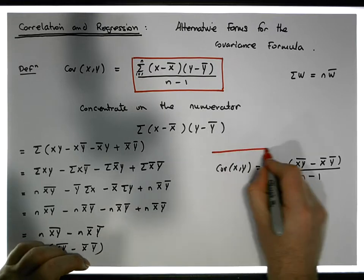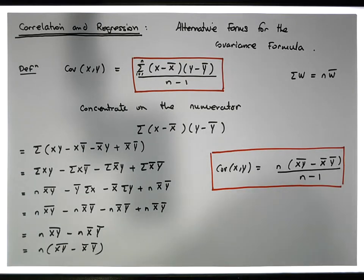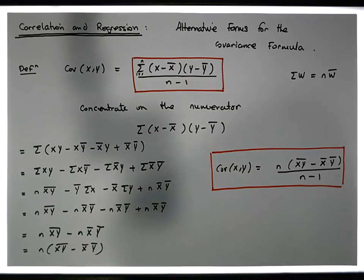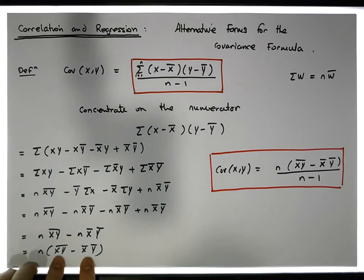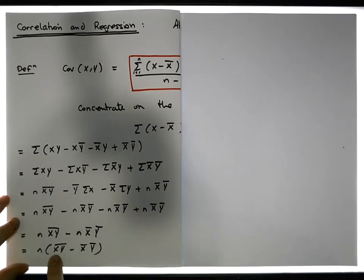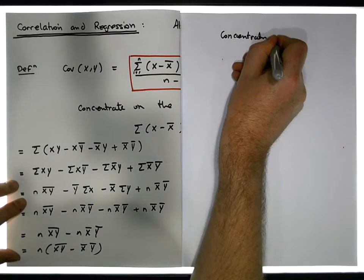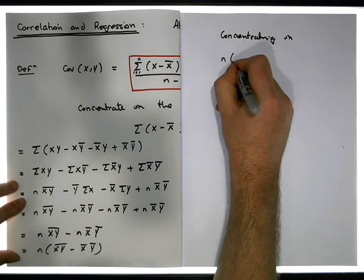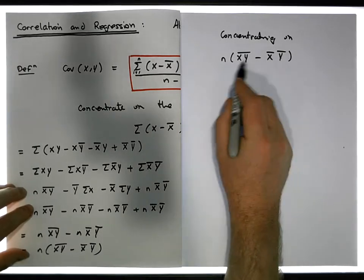There's another form of this equation where we no longer have summations — we just have the averages. Let's concentrate on this particular term and convert it away from averages into sigma notation. Concentrating on the numerator: n times the x̄ȳ bar minus x̄ times ȳ, and converting these into sigmas.